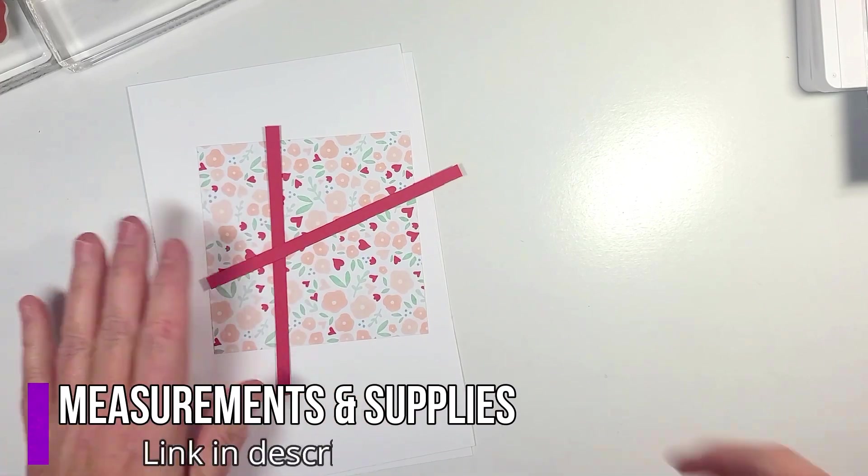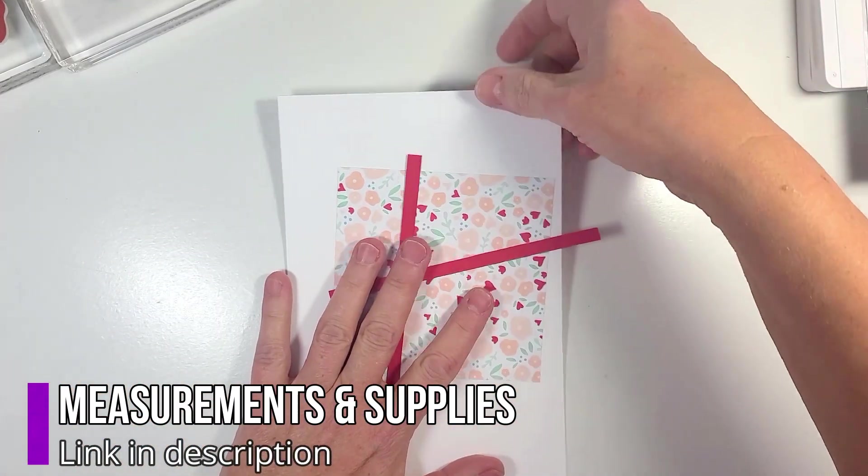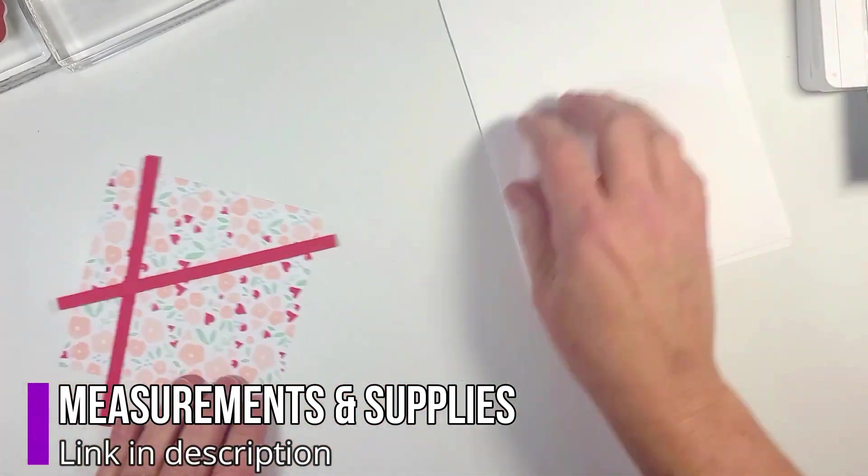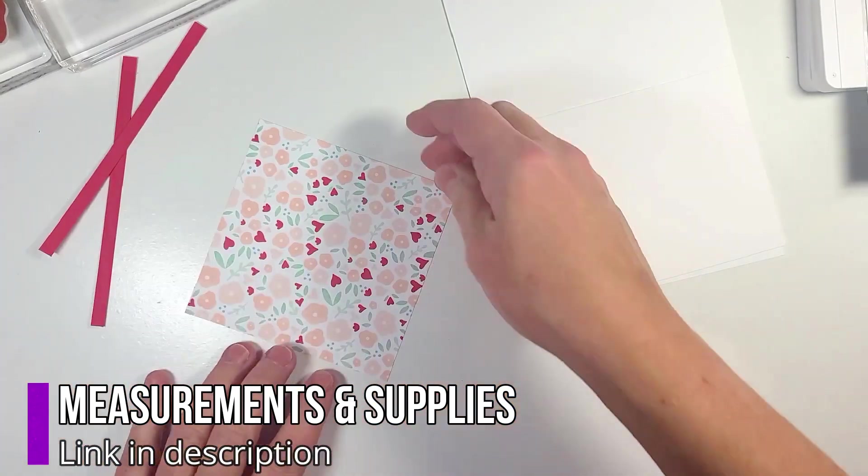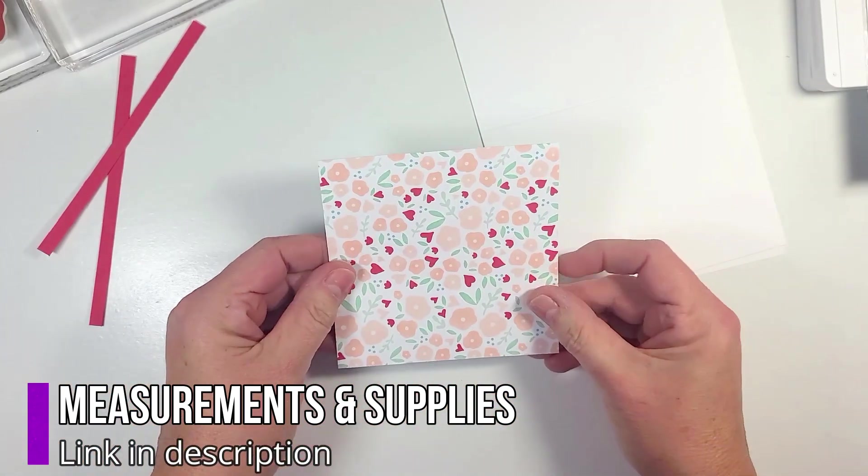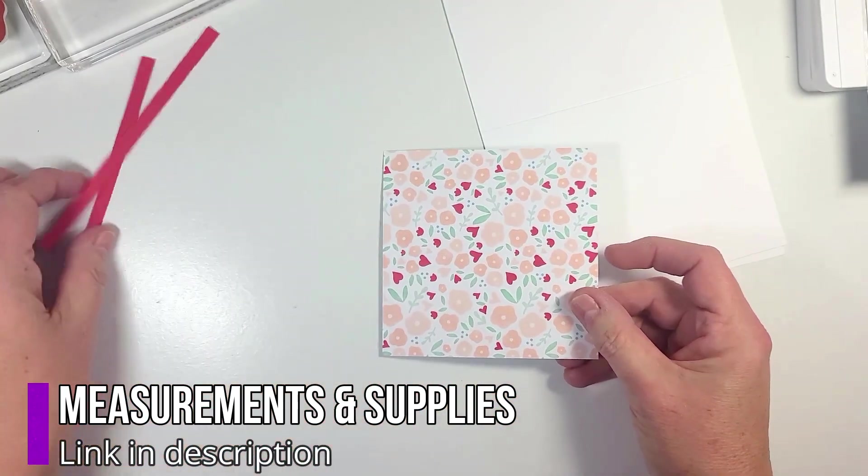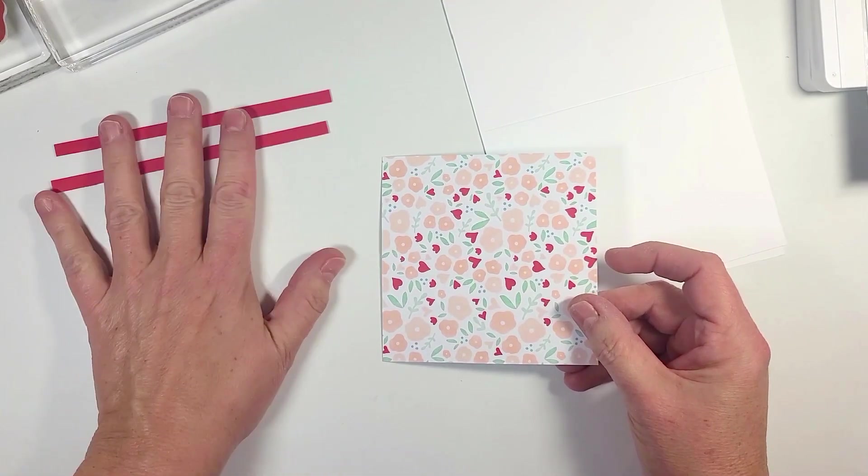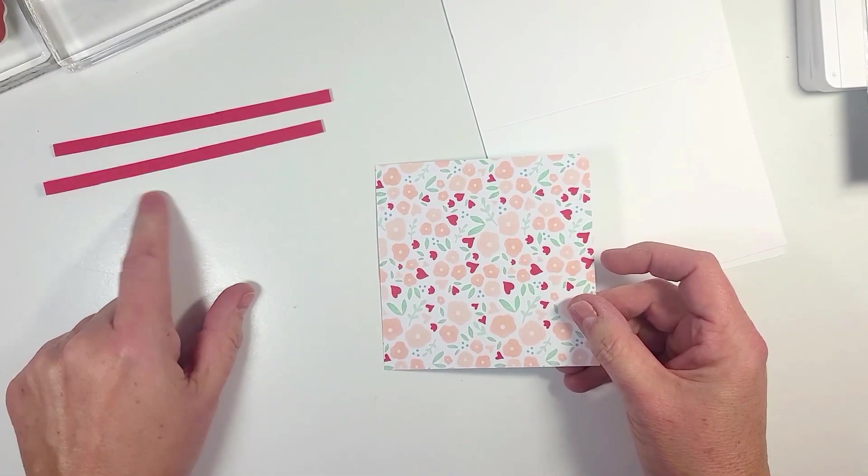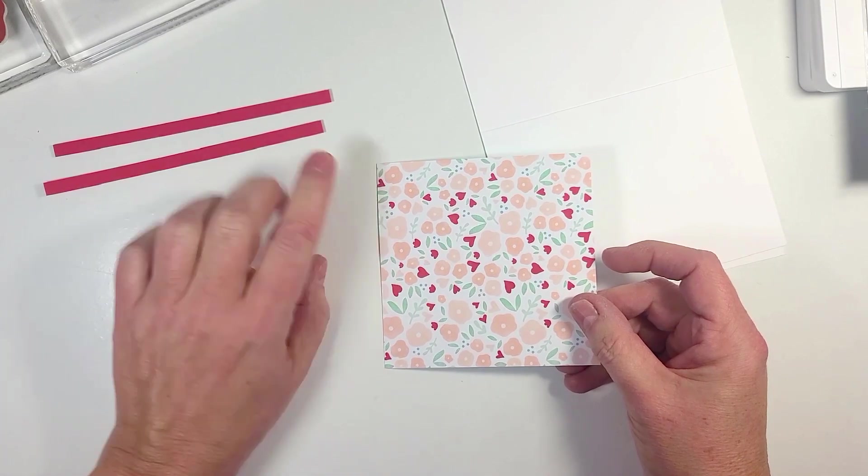To get started, look at these simple supplies. You just need your card base right here. You need a piece of designer series paper that's measured at four and a quarter by four and a quarter. Then you're going to need two strips of just plain paper or card stock that is a quarter of an inch by five and a half.